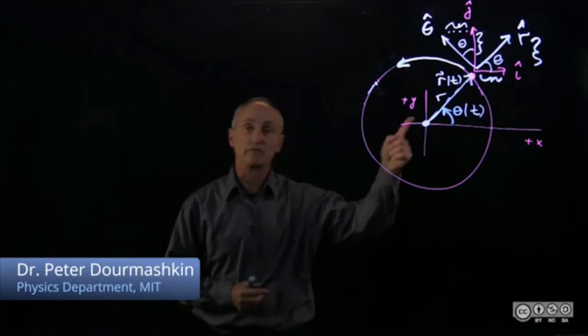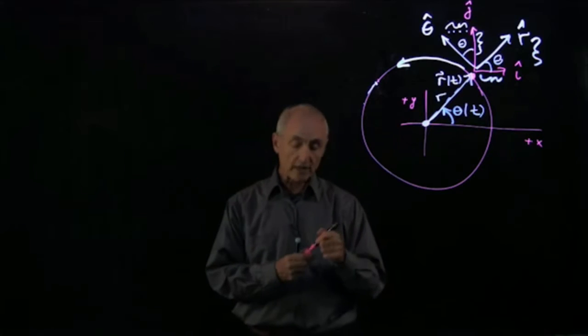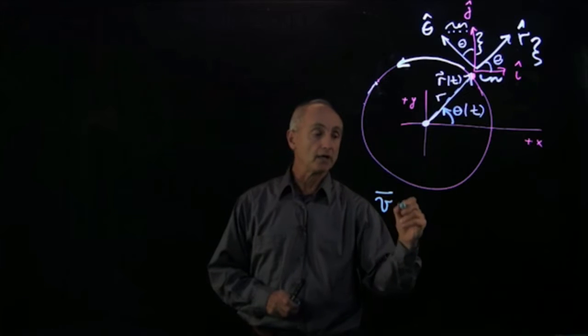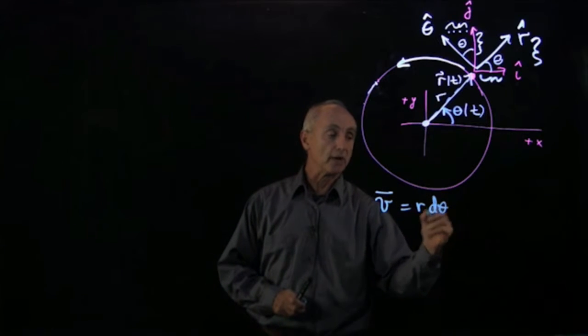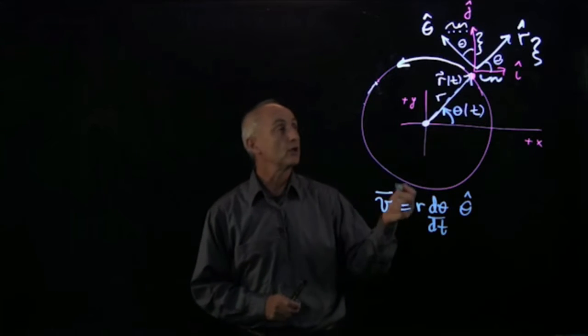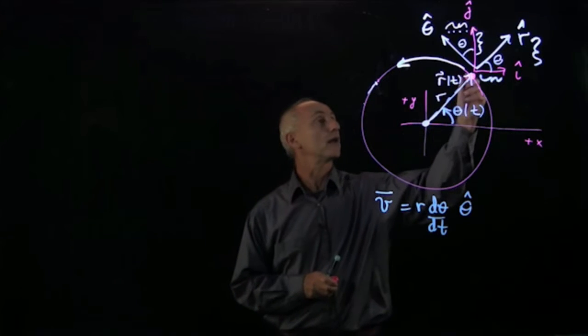When we analyzed how the position vector changed, we know that the velocity for circular motion is given by the radius times the rate that the angle is changing. And it points tangential to the circle.